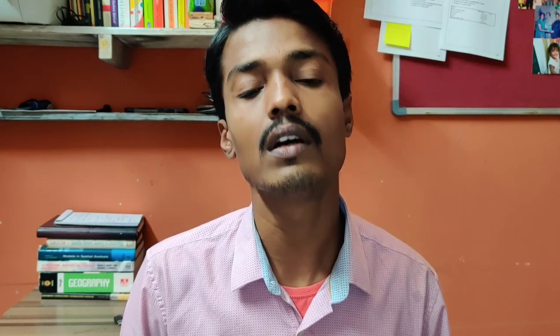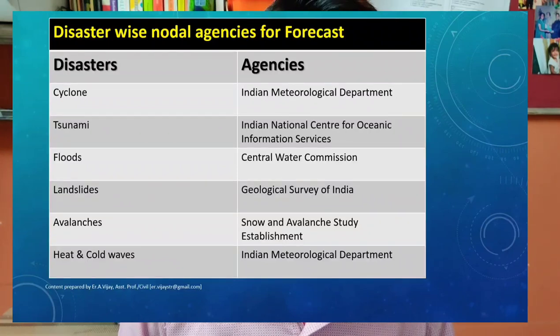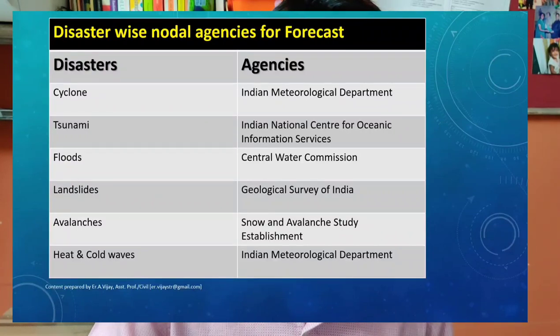Different agencies work on specific disasters. For cyclones, it is IMD. For tsunami, the Indian National Center for Ocean Information Services — INCOIS. For floods, the Central Water Commission. Landslides are handled by the Geological Survey of India. Avalanche monitoring is by the Snow and Avalanche Study Establishment under the Ministry of Defence. Heat and cold waves are again handled by IMD.